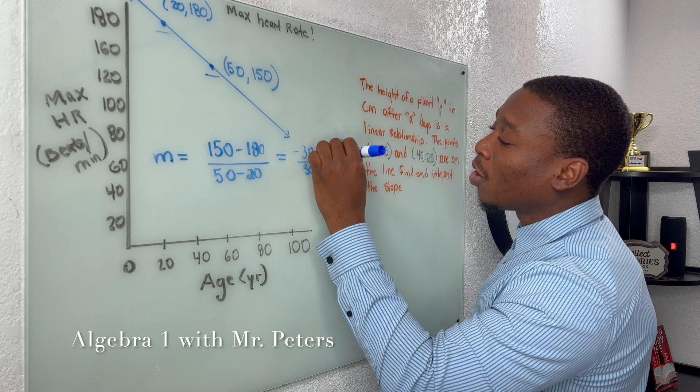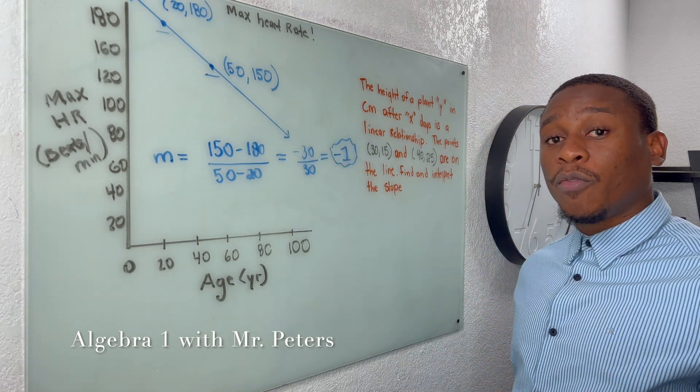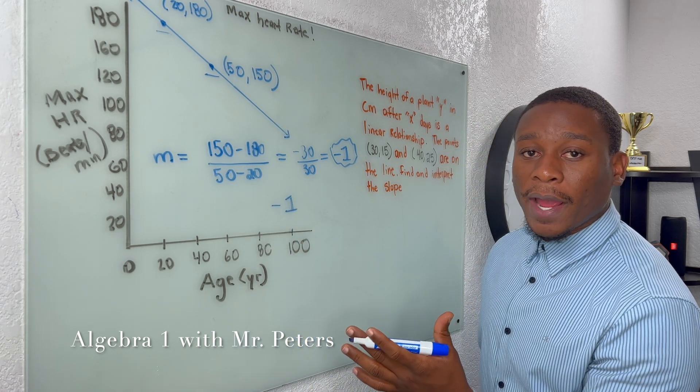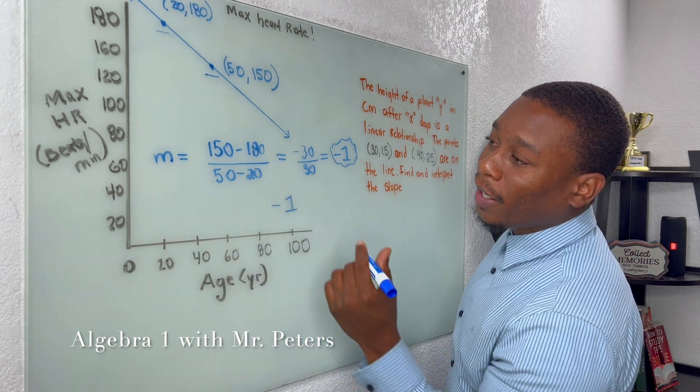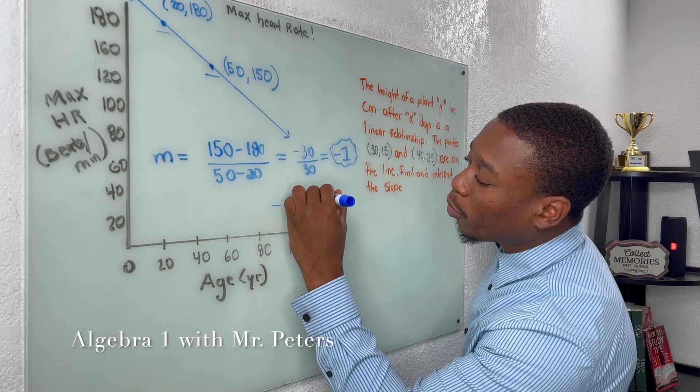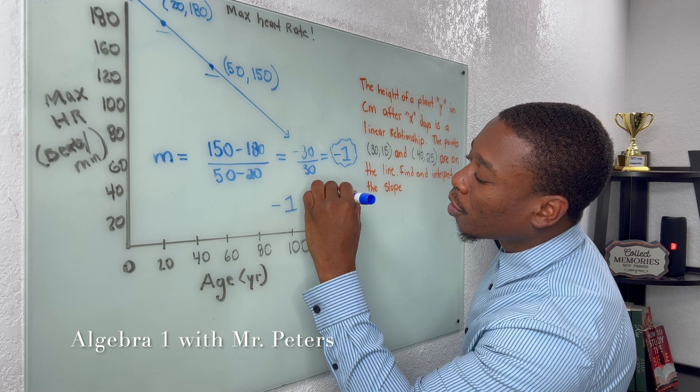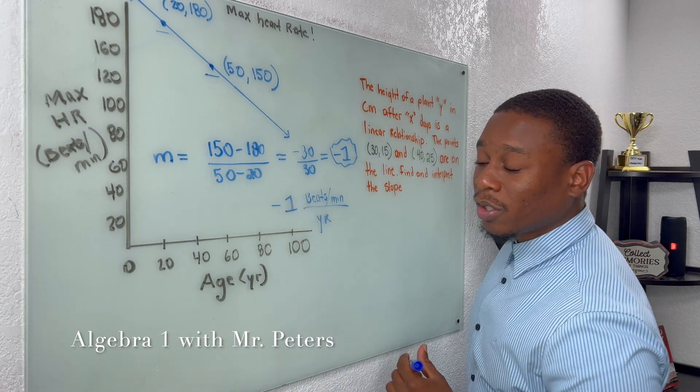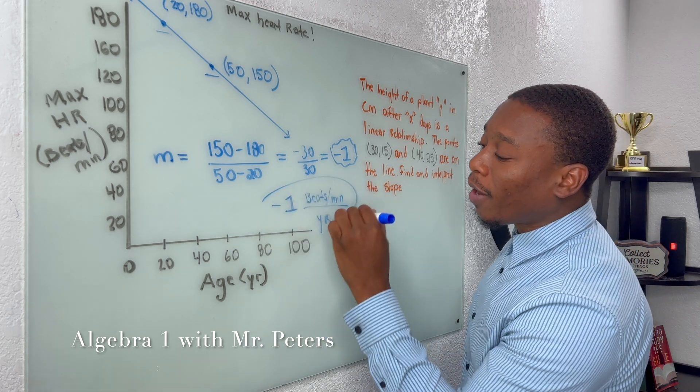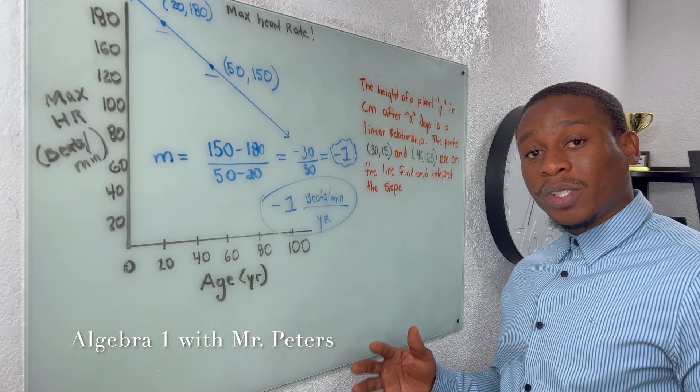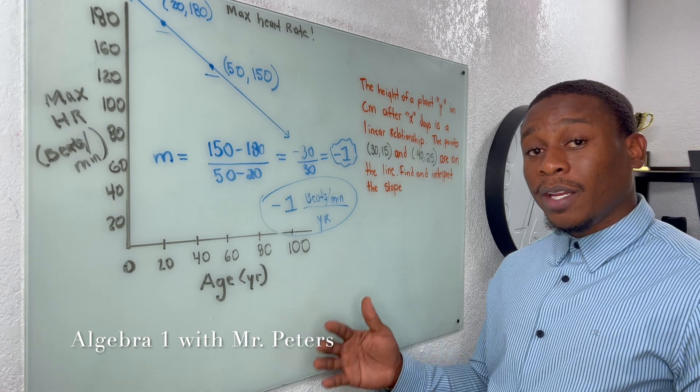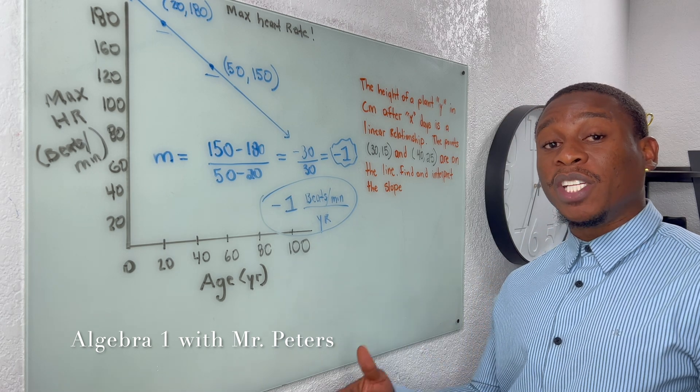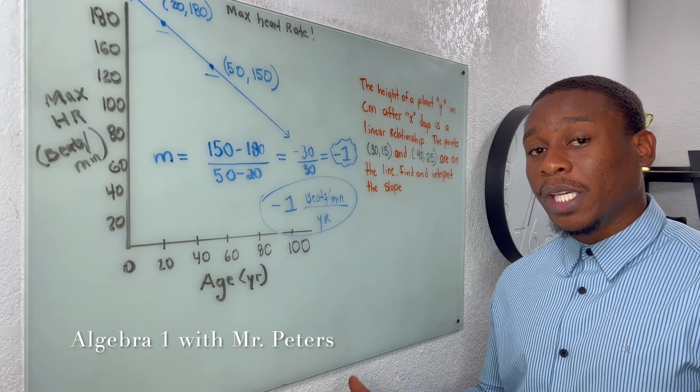Now the issue here is, what exactly does this negative one represent? To figure this out, we just need to look at the X and Y axis. On the Y axis, we know we're talking about beats per minute. And on the X axis, we're talking about years. So when we look at this final answer now, what we're saying is, as the age increases, we should know that the maximum heart rate in beats per minute is going to decrease.